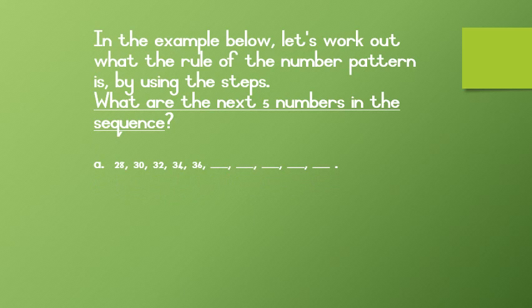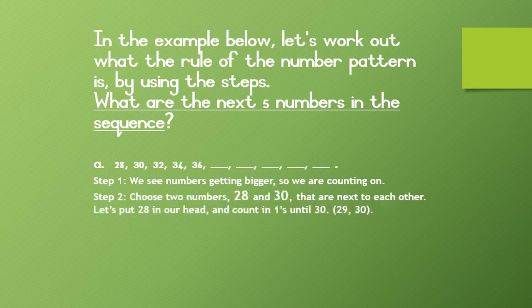In the example below Grade 3s, let's work out what the rule of the number pattern is by using the steps. What are the next five numbers in the sequence? In the first sequence we have 28, 30, 32, 34, and 36. Step 1: We see numbers getting bigger so we are counting on. Step 2: Choose two numbers — 28 and 30 — that are next to each other. Let's put 28 in our head and count in ones until 30. We get 29, 30. We now know that the rule is plus 2, and because it is a pattern it repeats.